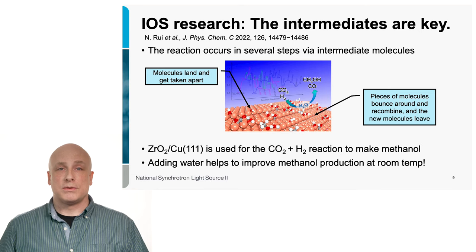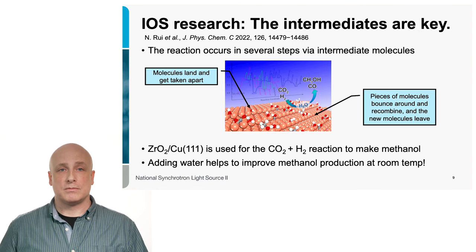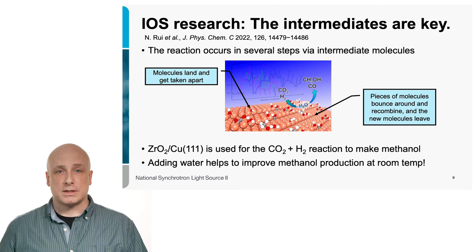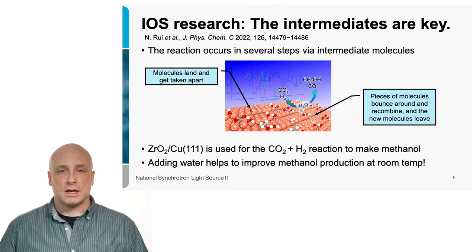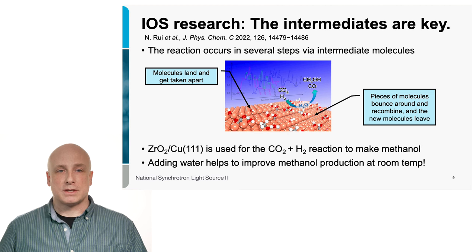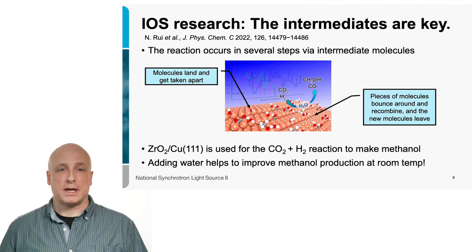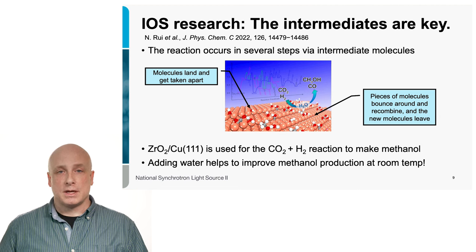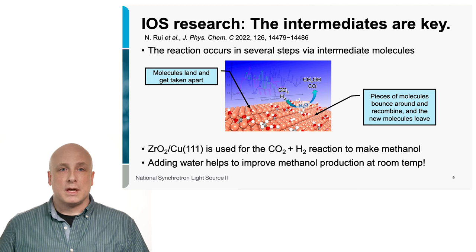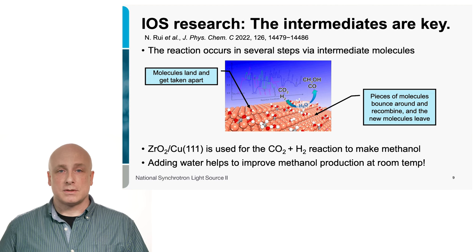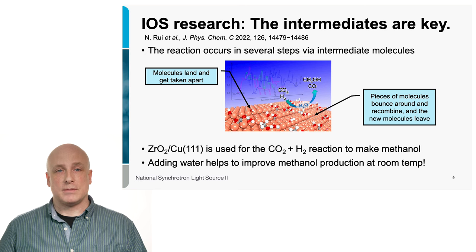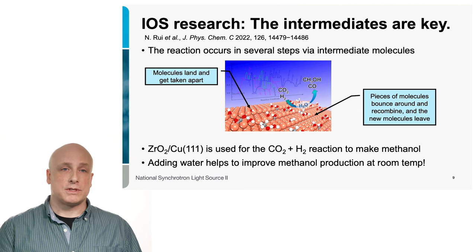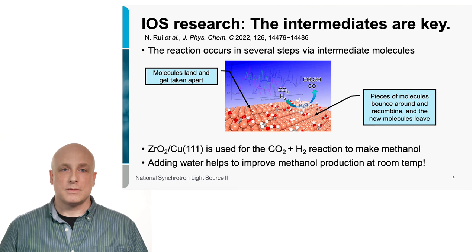So, some of the research that we did here, just a very quick mention of it. We worked with some of our collaborators here at Brookhaven National Laboratory in the Chemistry Department, and we were looking at zirconium oxide that was mounted on a copper single crystal. And we were looking at how carbon dioxide and hydrogen can react together to make methanol. The reaction occurs in several steps, right? The way that the catalyst actually works is the molecules, your feedstock molecules, the carbon dioxide and hydrogen, when they hit the surface of the catalyst, they then break apart, ideally.